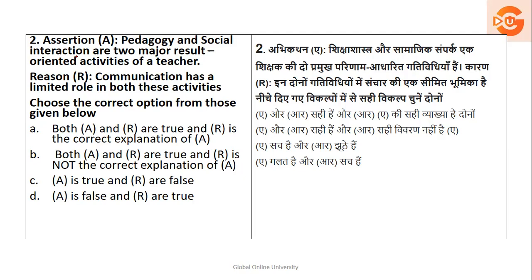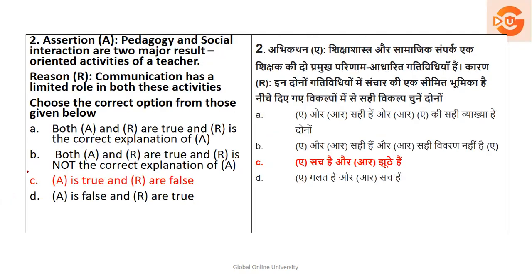Now, pedagogy and social interaction require communication — you need to communicate. But the reason states that communication has a limited role, which is false. So A is correct but R is false. There is no explanation matching. A is true but R is false, so the correct answer is option C. As I always say, I prefer reading the question, going through the answers, and downsizing the options to come close to the right answer. You have to keep full concentration on the question, and automatically you will start practicing this way.